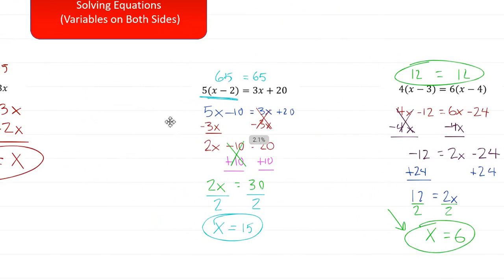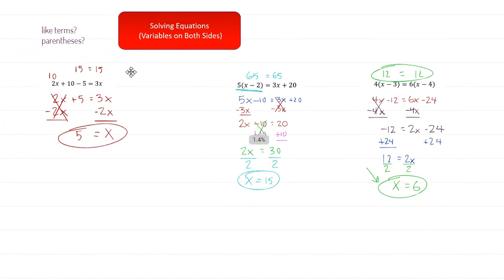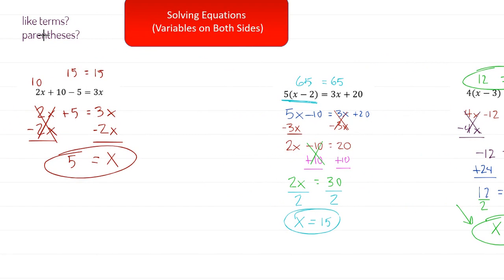To recap when we have variables on both sides: first check if there's anything we can simplify — any like terms to combine, any parentheses to use the distributive property on. Do this for both sides. Once both sides are fully simplified, go about getting all variables on one side and all constants on the other. That's the whole point of variables on both sides — get everything together so we can solve it just like the earlier problems. Variables on one side and we can definitely solve it.